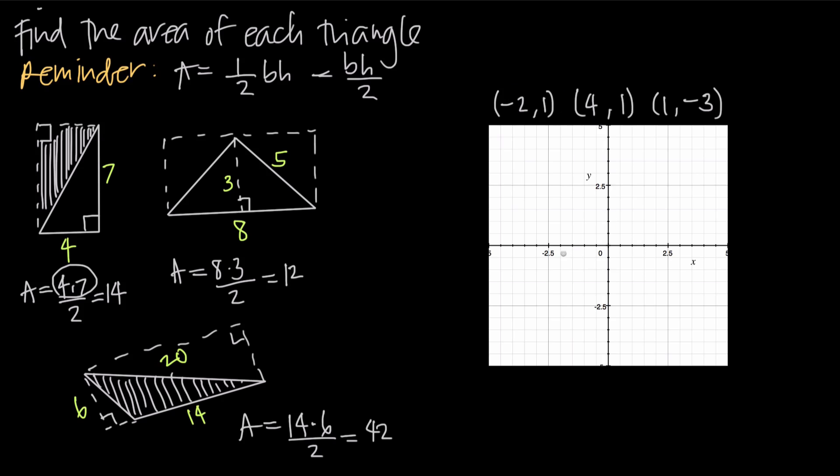We have the point negative 2, 1. So we'll come over here to negative 2 and then up to positive 1, and we get this point right here. Then we look at the point 4, 1. So we come out to 4 and up to positive 1, this point right here.